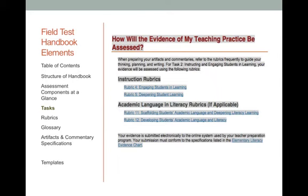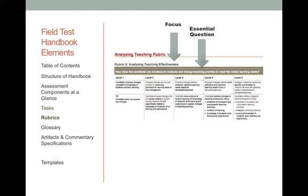The last question answered in each task description in the handbook is: how will the evidence of my teaching practice be assessed? This part tells you which of the 12 TPA rubrics will be used to assess the artifacts and commentary produced for that specific task. The 12 rubrics for the TPA are found after the glossary section in the handbook.